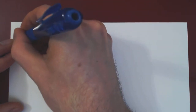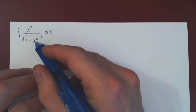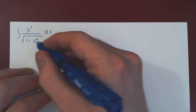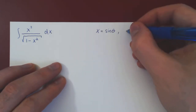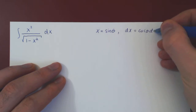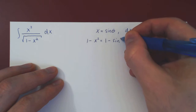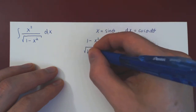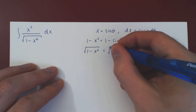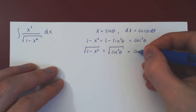We're trying to integrate x squared over the square root of 1 minus x squared. Since 1 minus sine squared equals cosine squared, this will cancel the square root. So we let x equal sine of theta, and take the differential: dx is cosine of theta d theta. Then 1 minus x squared is 1 minus sine squared theta, which is cosine squared theta, and the square root of cosine squared theta leaves us with cosine of theta.